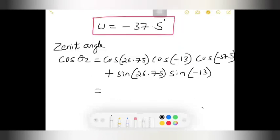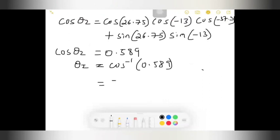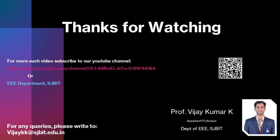If you calculate this, you will get the answer as cos theta z is equal to 0.589. From this, theta z is equal to cos inverse of 0.589, that will be equal to 53.914 degrees. This is the value which is supposed to determine for that problem.